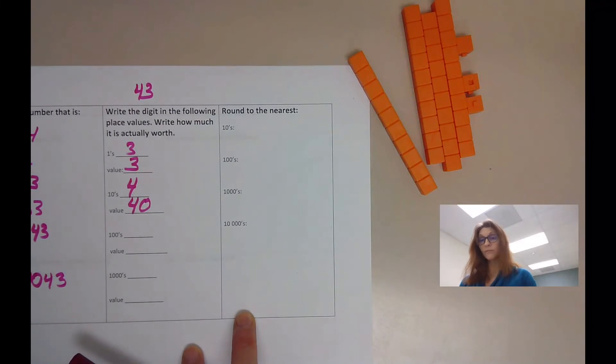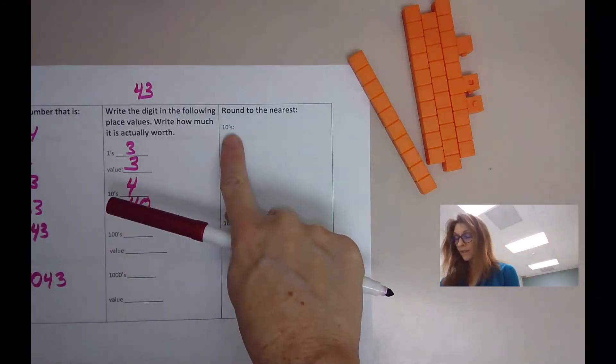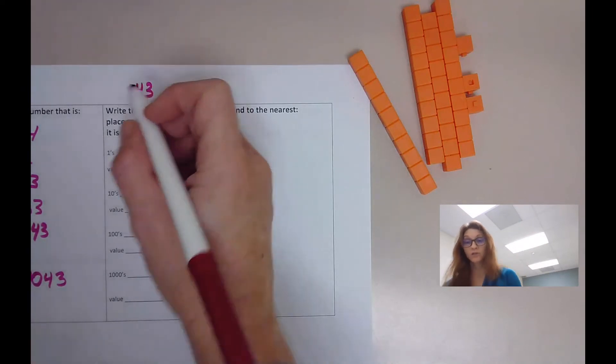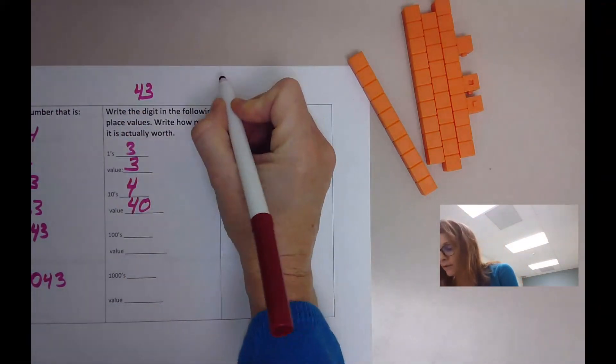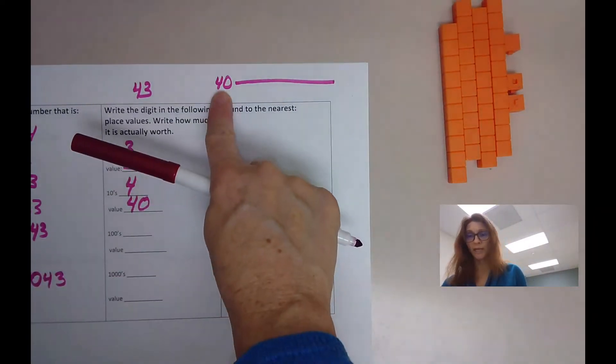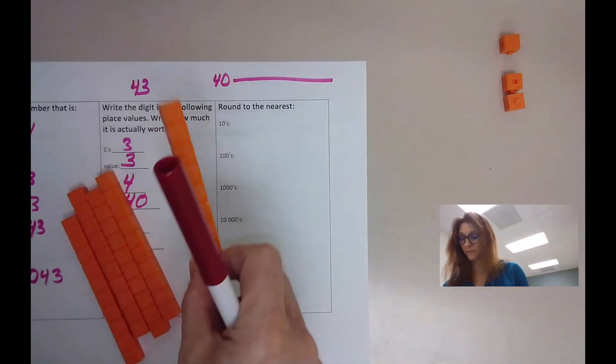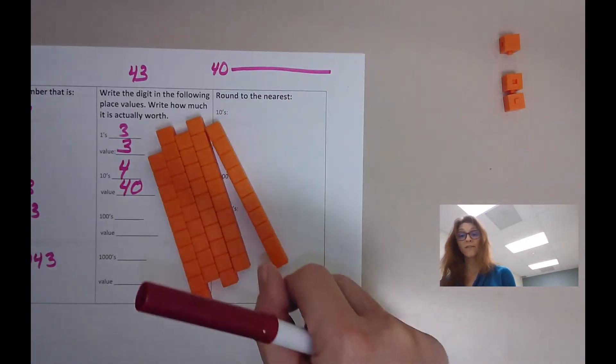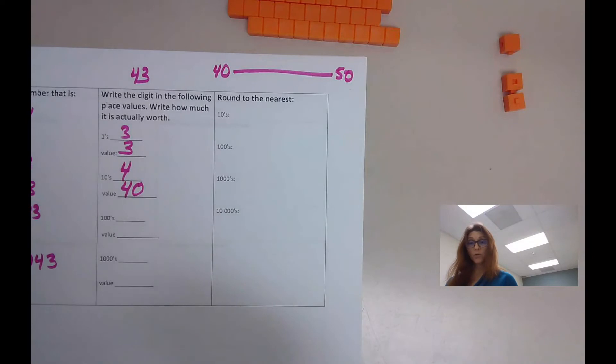Rounding to the nearest. We just have to decide what is this number closer to. Rounding to the nearest tens. So here we have our number 43. That means we start off at the group of tens that we're in, the forties. And we would go to see if it's closer to 40 or the next group of tens, which would be 50.